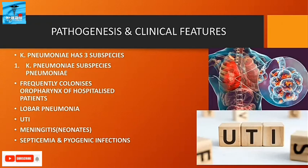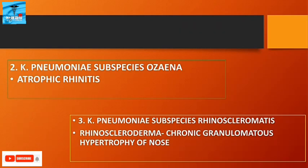Pathogenesis and clinical features: Klebsiella pneumoniae has three subspecies. First is Klebsiella pneumoniae subspecies pneumoniae. They frequently colonize the oropharynx of hospitalized patients and cause lobar pneumonia, urinary tract infections, meningitis in neonates, and also septicemia and pyogenic infections. Then Klebsiella pneumoniae subspecies ozaenae — it causes atrophic rhinitis.